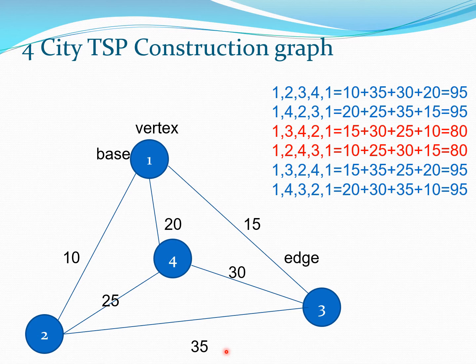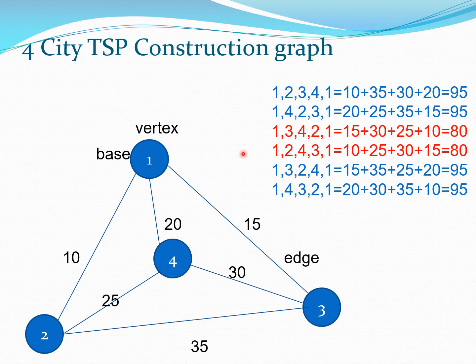The salesman has to go from his base station and return to the base station. One path could be 1 → 2 → 3 → 4 → 1. Looking at the distances: 1 to 2 is 10, 2 to 3 is 35, 3 to 4 is 30, and 4 to 1 is 20. That gives 10 + 35 + 30 + 20 = 95. This could be kilometers or miles as the case may be.